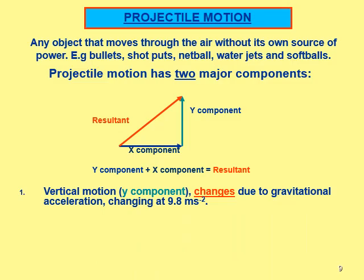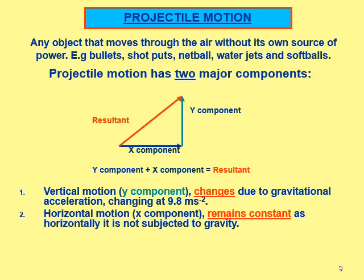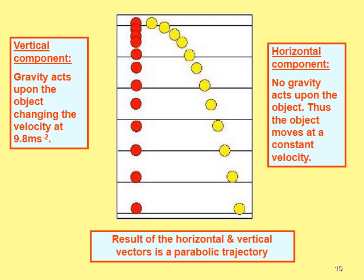We're looking at trigonometry here: the y-component plus x-component equals the resultant using Pythagoras. The vertical motion, the y-component, changes due to the effect of gravity — either 10 m/s² or 9.8 m/s² depending on the question. The horizontal motion remains constant as it is not affected by gravity — there is no unbalanced gravitational force on the x-component, only on the y-component. For Level 2, air resistance can be ignored.